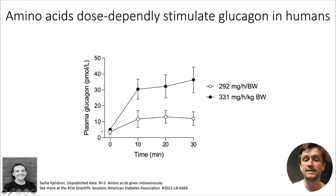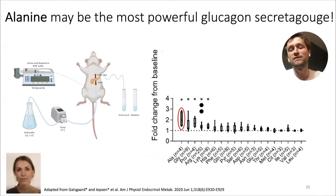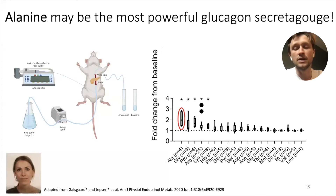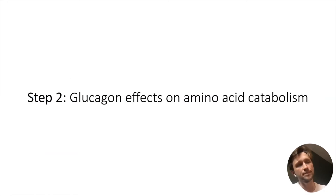A fellow of mine, Sasha, has nicely shown in humans — across a variety of doses — that amino acids dose-dependently stimulate glucagon. A PhD fellow, Katrine, mapped all the different amino acids in a physiological system termed the isolated perfused pancreas in mice. What we could show is that one of the most glucagon-stimulating amino acids is alanine. That was just one aspect of the liver-alpha cell axis; now we need to look at the effect of glucagon on amino acid catabolism.